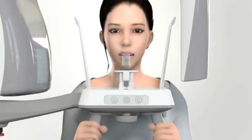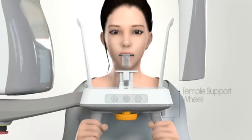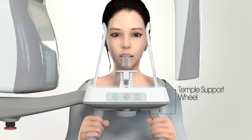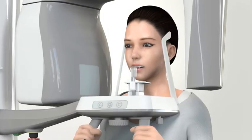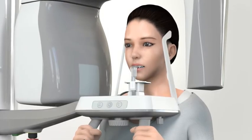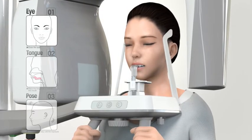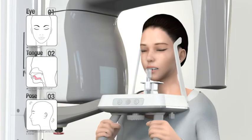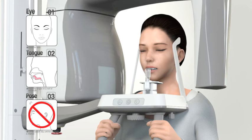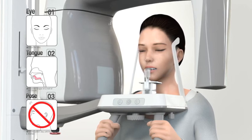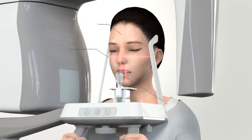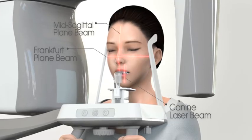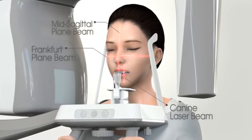When everything is ready, rotate the temple support wheel to tighten the temple support to stabilize the patient. During image capturing, ask the patient to close the eyes and place the tongue to the hard palate. Also instruct the patient not to move until the image capturing is completed. The operator should confirm that all three beams are placed appropriately before capturing the image.